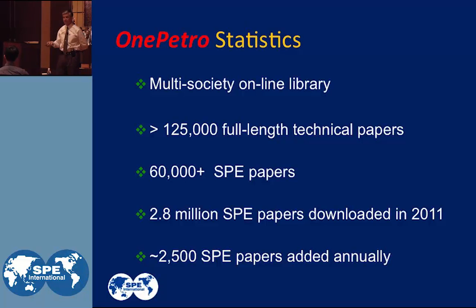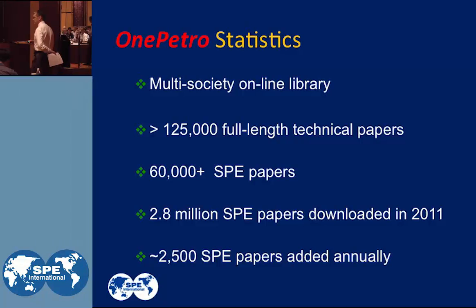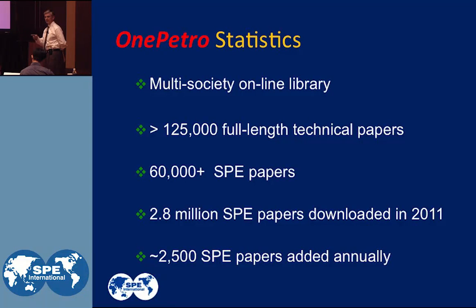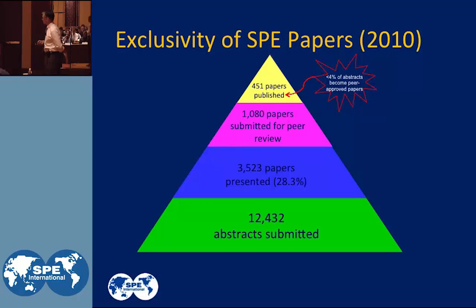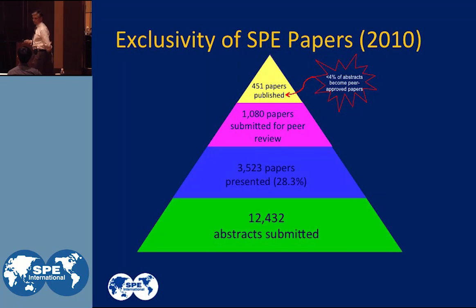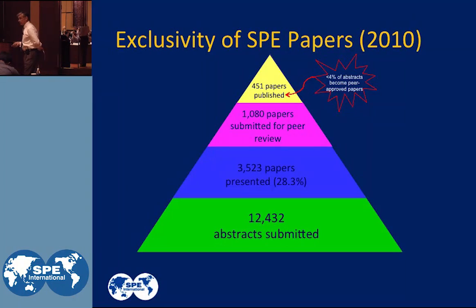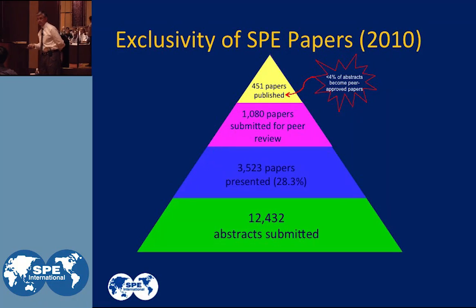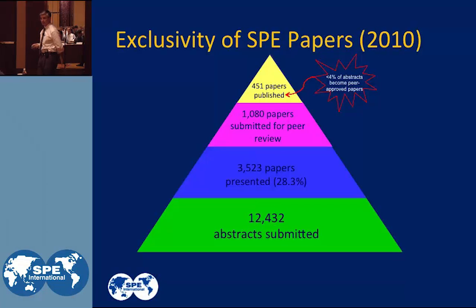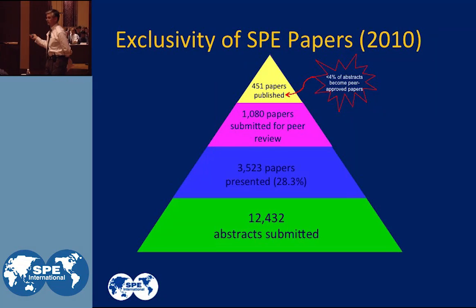Here's a 2010 statistic that gives you an idea of the exclusivity of papers once they are peer reviewed and get into a journal. Just over 12,000 abstracts were submitted in 2010 through conferences and journals. Of those, about a quarter were presented at conferences. About a third of those — roughly 1,000 — were submitted for peer review. Then 451 papers were published. That's about four percent of all abstracts. It's pretty exclusive, and it all starts with writing a good, convincing abstract.